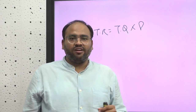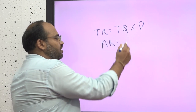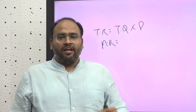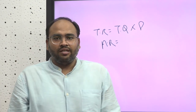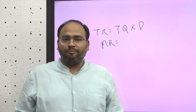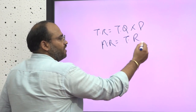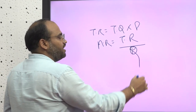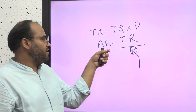The next important term in the concept of revenues is average revenue. How do we calculate average revenue? As the name suggests, this is the average of the revenue — meaning the total revenue earned by the firm when divided by the total number of units sold by that company gives us the average revenue. So when total revenue is divided by total quantity sold, the figure that we obtain is known as average revenue.